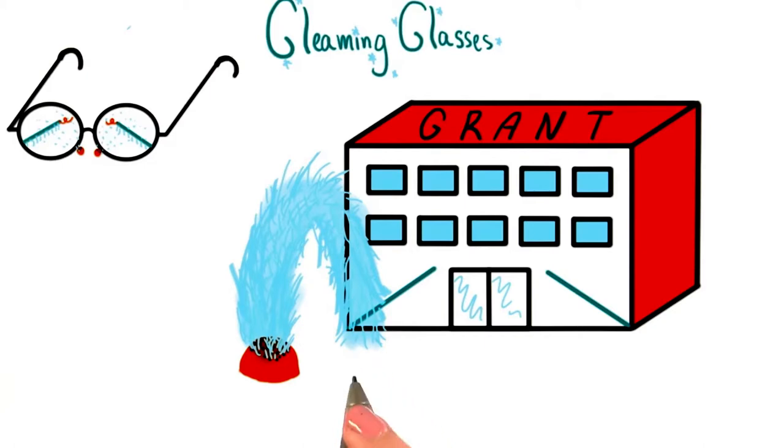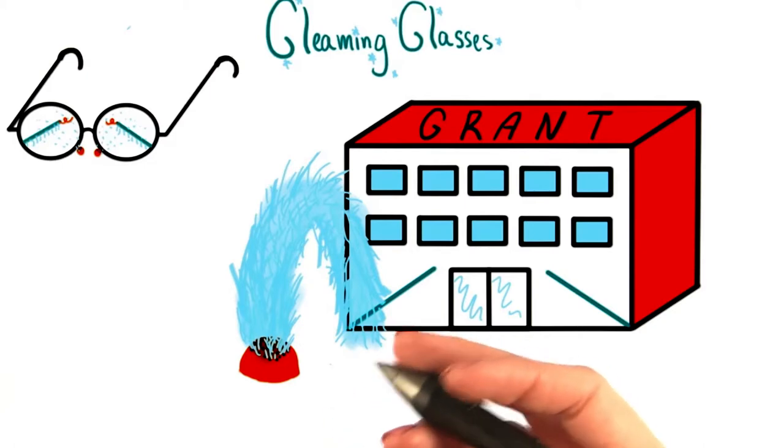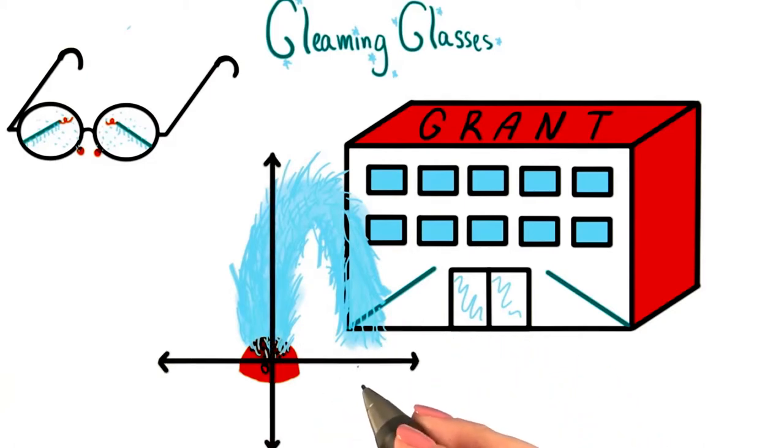However, he wants us to check that equation for him. Let's help him see if it's right. Just like we had with Grant's slingshot a few lessons ago, let's set up a coordinate plane so that the fountain is positioned at the origin, just like this.